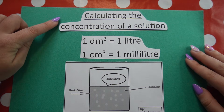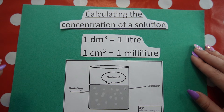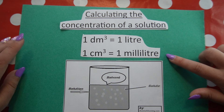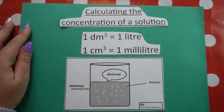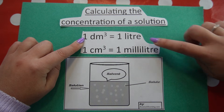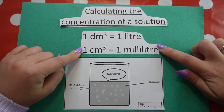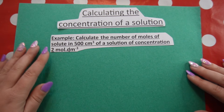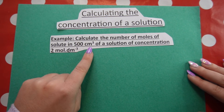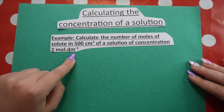When calculating the concentration of a solution, volume is not always given in cubic decimeters or cubic centimeters — it can also be given in liters or milliliters. One cubic decimeter is equal to one liter, and one cubic centimeter is equal to one milliliter. The first example says: calculate the number of moles of solute in 500 cubic centimeters of a solution of concentration 2 mol·dm⁻³.